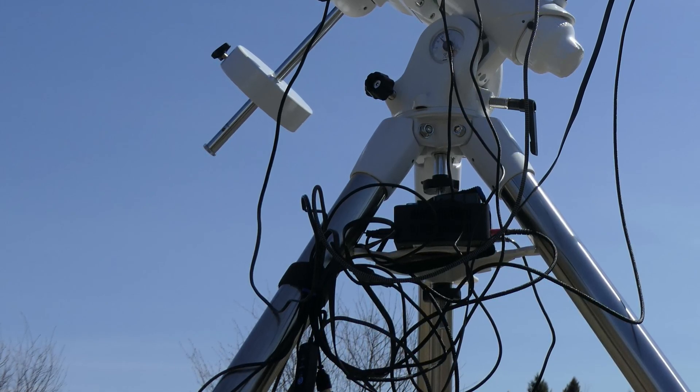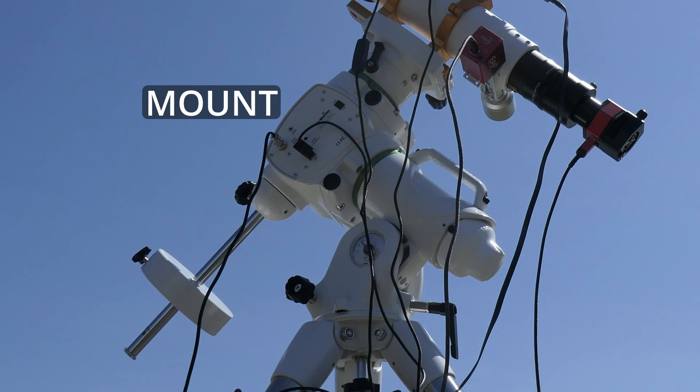On top of the tripod sits the mount. The mount is a mechanism which slowly turns the telescope to compensate for Earth's rotation. And good mounts will also compensate for how objects appear to rotate in the sky, as the turning of the Earth leads to a changing perspective.